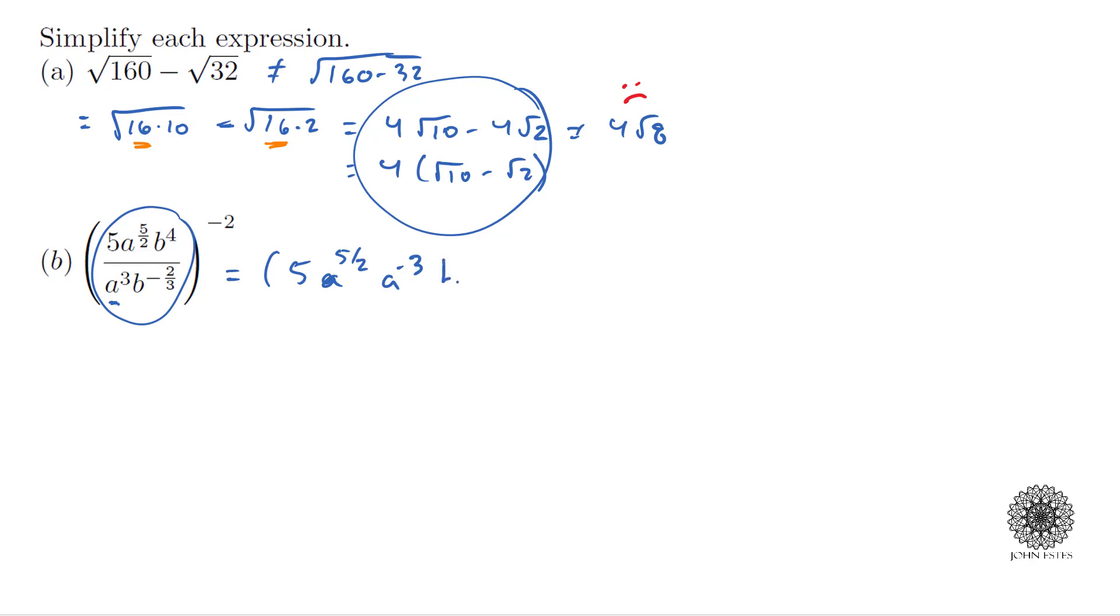All right, then I have b to the fourth, and if I want to bring this b up to the top, that's going to be b to the negative negative two-thirds, which is the positive two-thirds power. And all that is to the negative 2 power that we'll deal with later. Let's clean this up first.